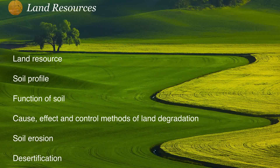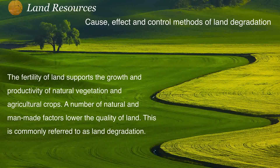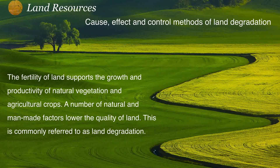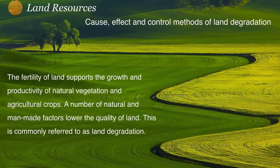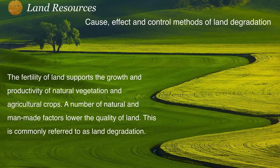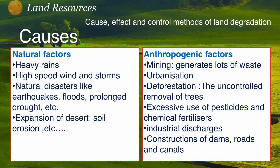Now let's talk about land degradation — its causes, effects, and control measures. Land degradation refers to a reduction in the fertility of land that supports the growth and productivity of natural ecosystems. When the fertility of land is reduced due to any natural or man-made calamity, we say land degradation is happening.